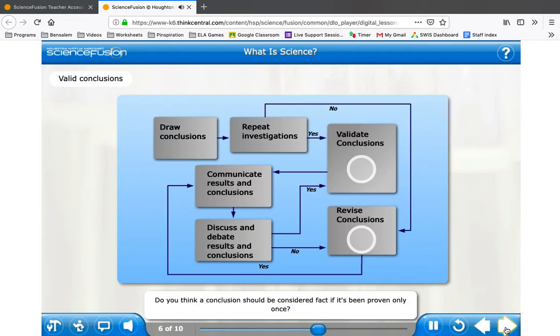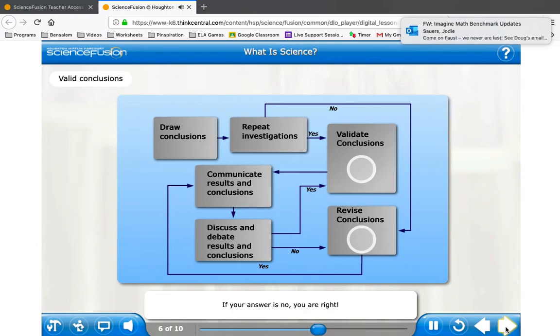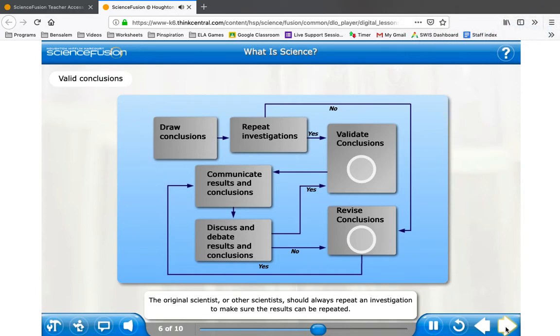Do you think a conclusion should be considered fact if it's been proven only once? If your answer is no, you are right. The original scientist or other scientists should always repeat an investigation to make sure the results can be repeated.